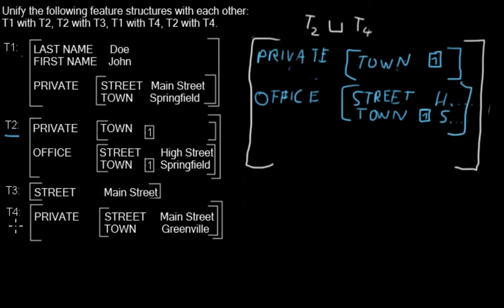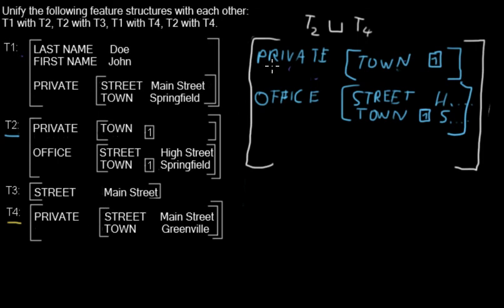Now we are adding all of t4. We don't have to add new properties because the only property that is in t4 is already present. So we have to unify the sub-feature structures, because it's a complex property.